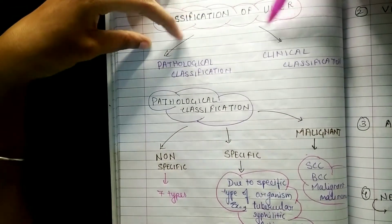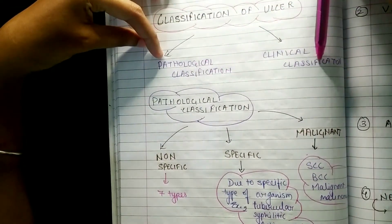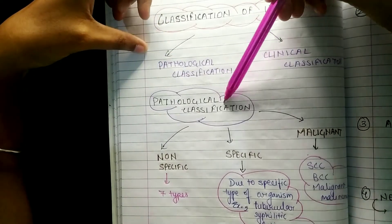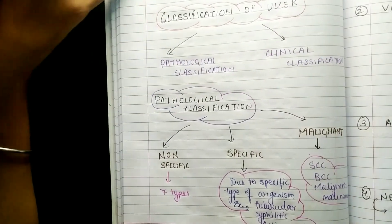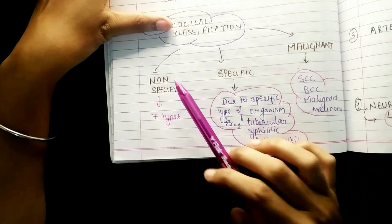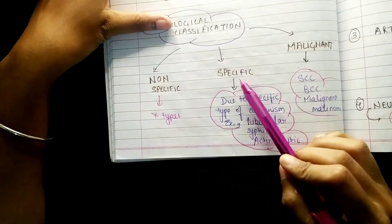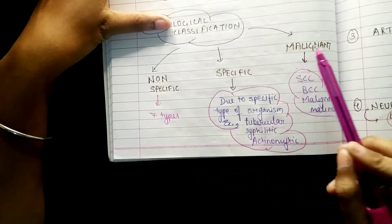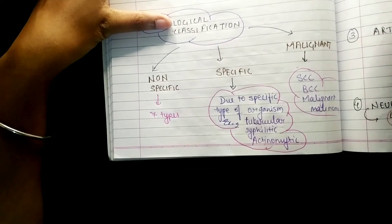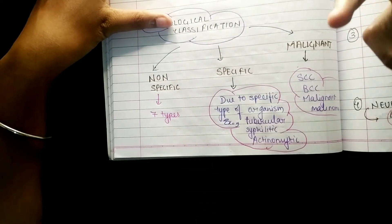Coming to the classification of ulcer, it is basically classified into two things: pathological classification and clinical classification. In pathological classification, it is again divided into three: non-specific, which has seven types, specific, and malignant. Non-specific is caused due to any type of organism.